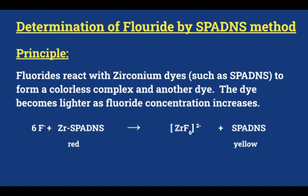According to the World Health Organization, the permissible level of fluoride in drinking water is about 1.5 parts per million (1.5 ppm). To determine the amount of fluoride present in drinking water we can make use of the SPADNS method. The principle is that fluoride ions present in water will react with zirconium dyes such as zirconyl SPADNS to form a colorless complex.